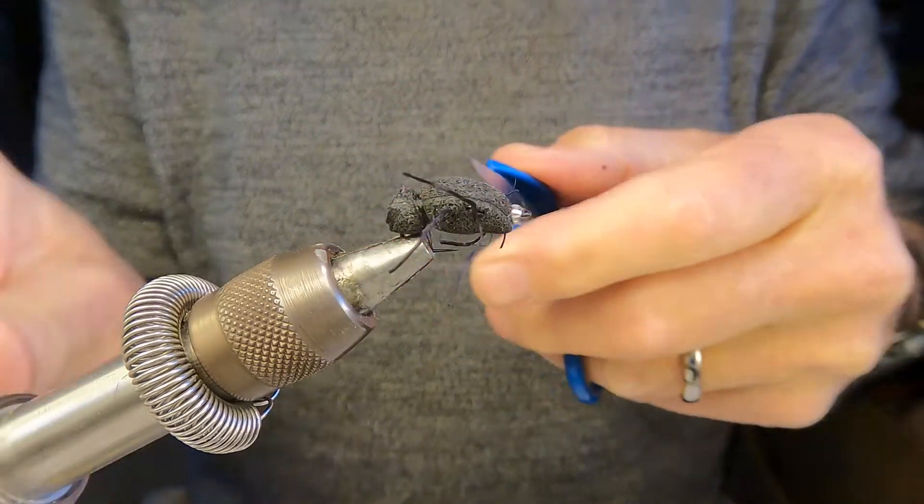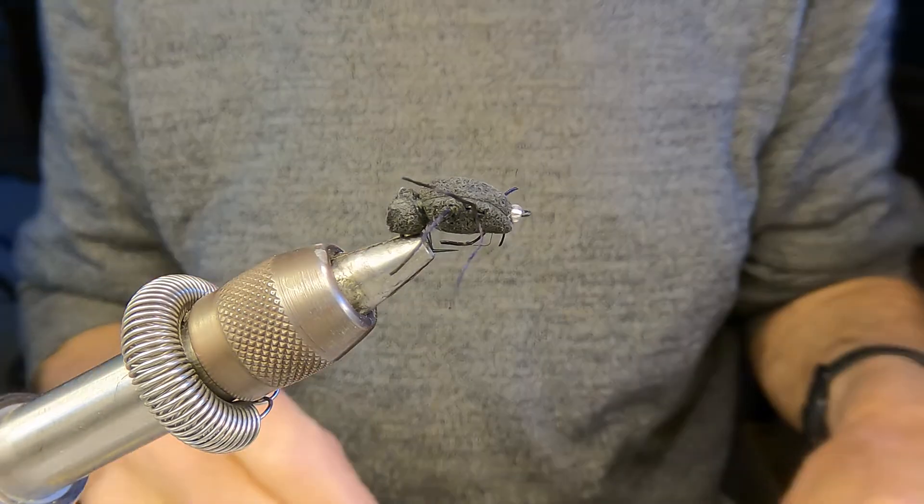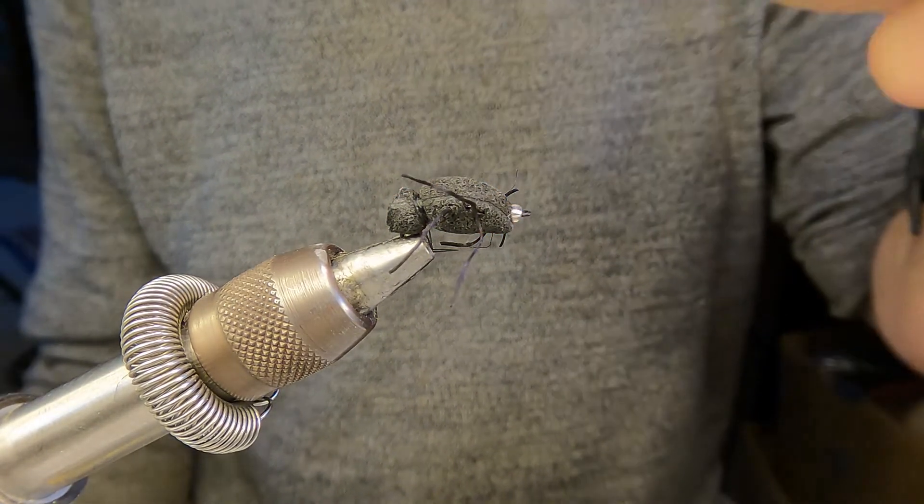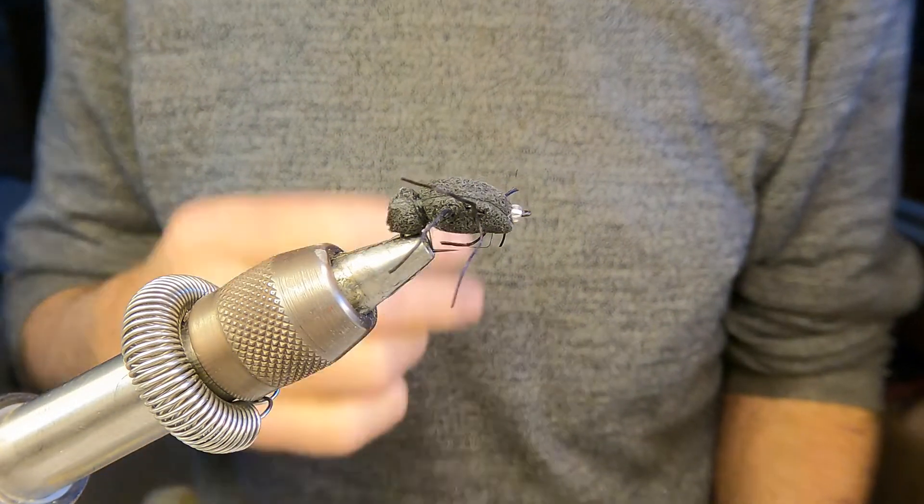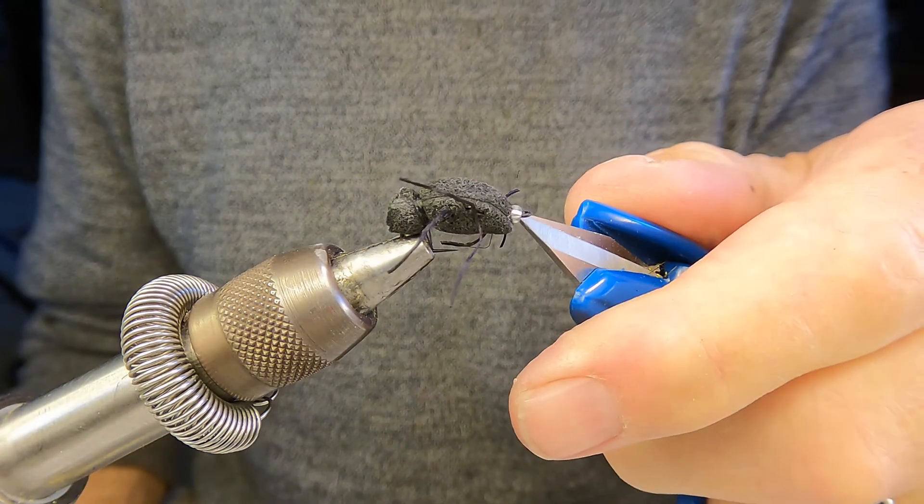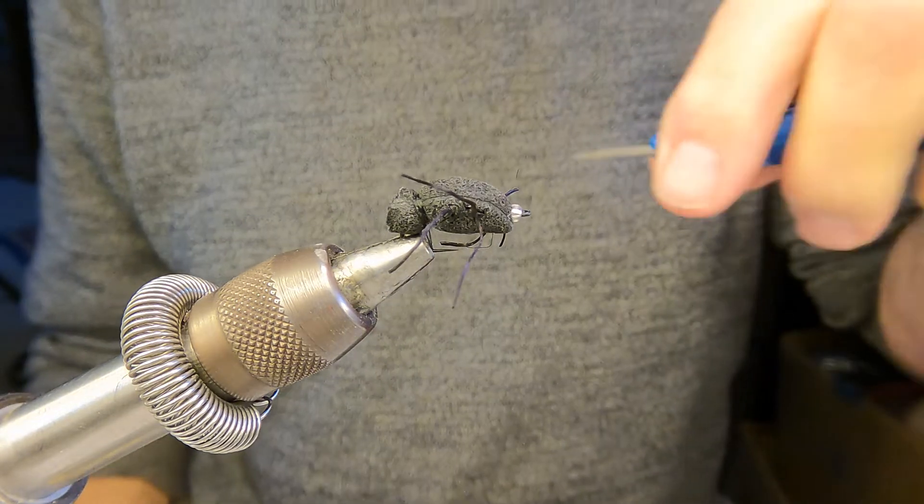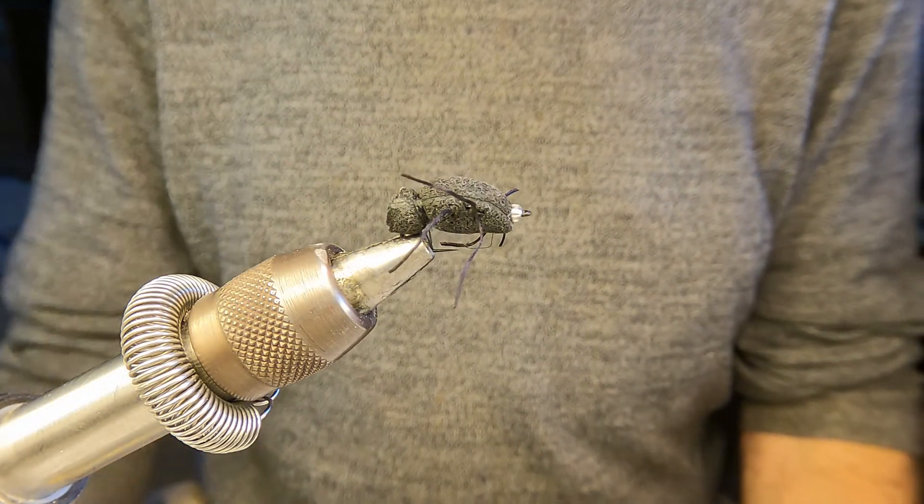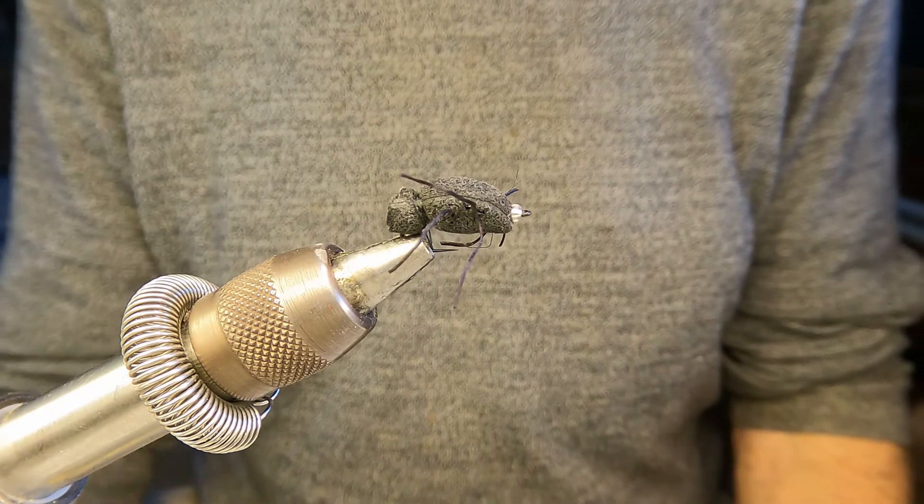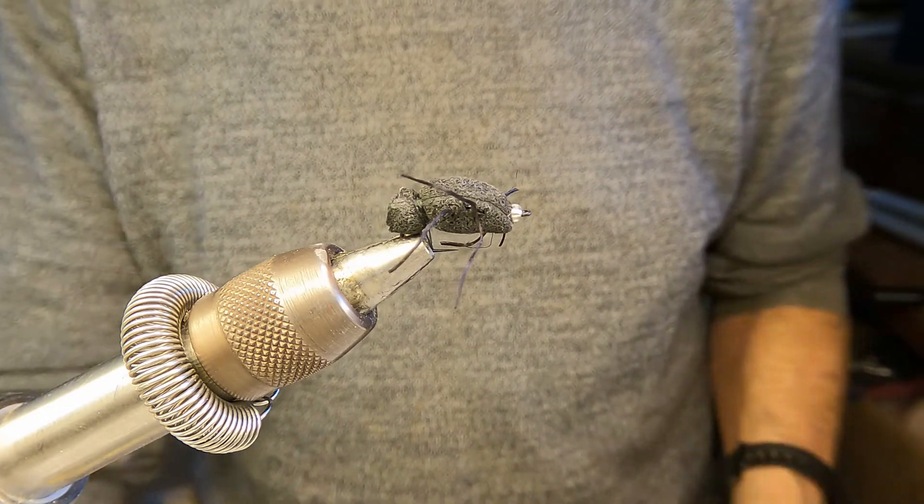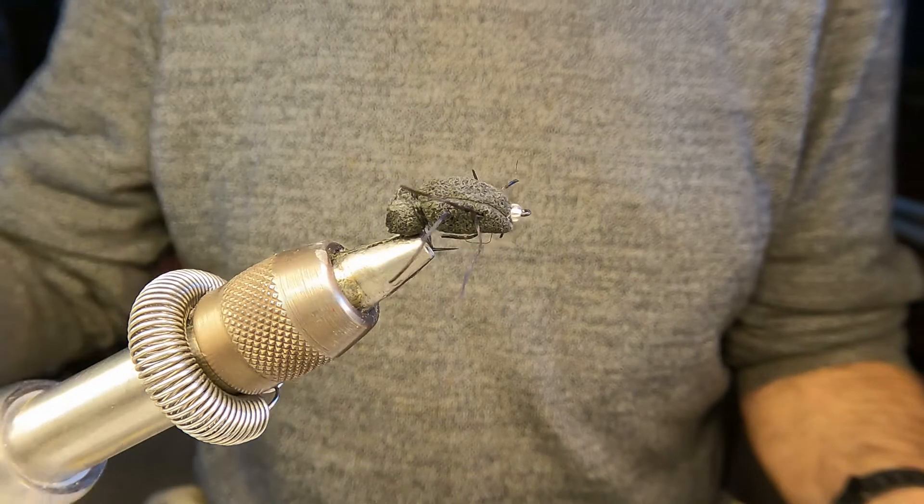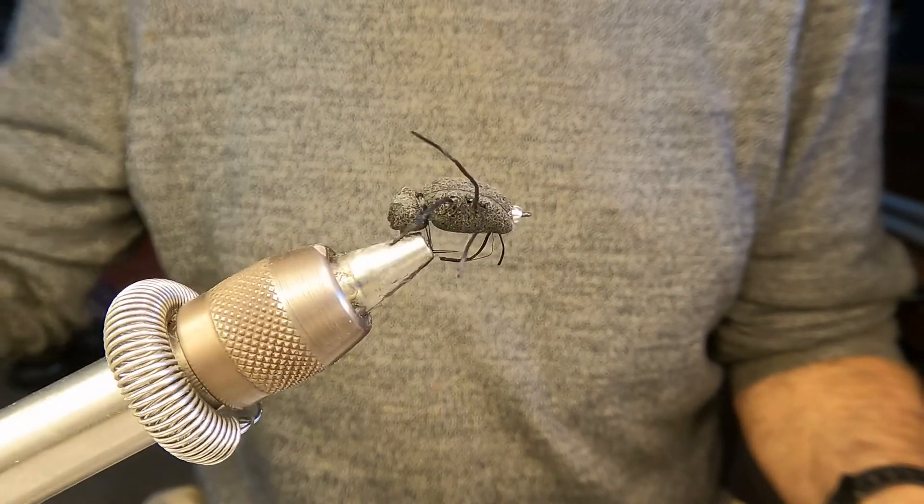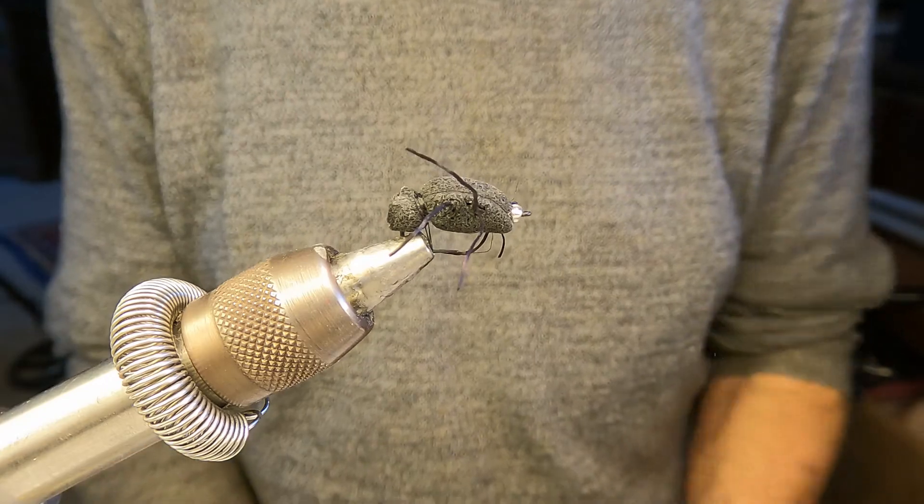This is how trimming this head adjusts the flotation. If we trim this head way back, this will actually float with the hook bend down and the posterior here represented by the plastron bubble will be up towards the surface. That's what is commonly seen in these water beetles—that's how they rest, the back swimmers and such.